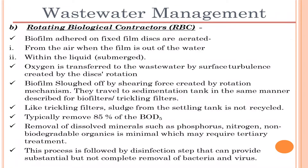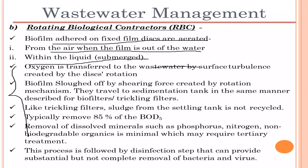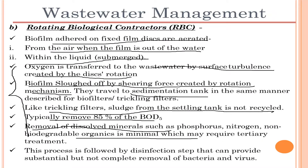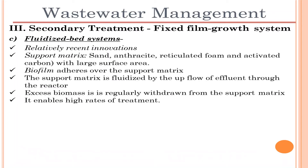The biofilm attached to the fixed film is aerated from the air when the disc is out of the water and receives nutrients when submerged. Oxygen is transferred to the wastewater by surface turbulence created by disc rotation. Biofilm is knocked off by the shearing force created by the rotation mechanism and travels to a sedimentation tank, similar to trickling filters. Sludge from the settling tank is not recycled. This process typically removes 85 percent of BOD in about five days. Removal of dissolved minerals such as phosphorus, nitrogen, and non-biodegradable organics is minimal and may require tertiary treatment.